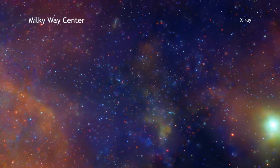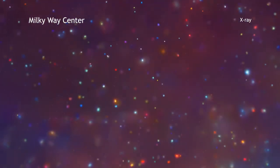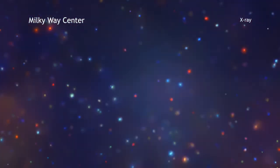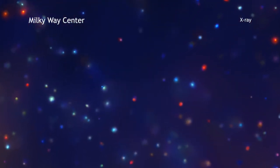In this new and deep image from Chandra, red represents lower-energy X-rays, green shows the medium range, and blue indicates the higher-energy X-rays Chandra can detect.